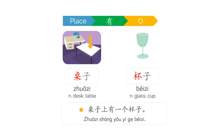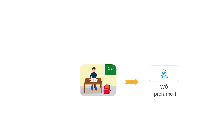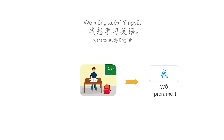桌子上有一个杯子。我在学校。我是学生。我想学习英语。I want to study English.